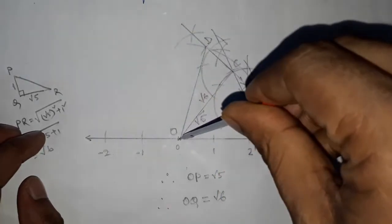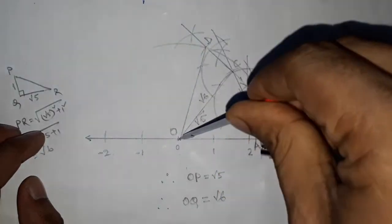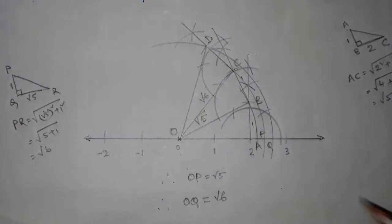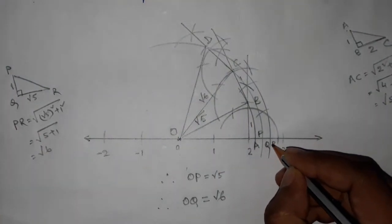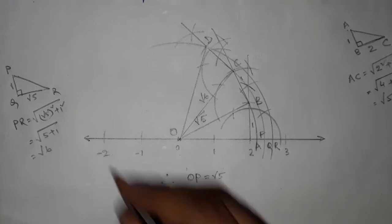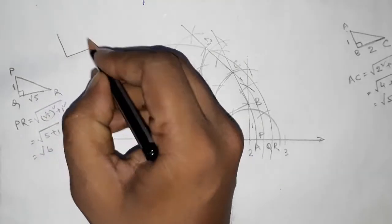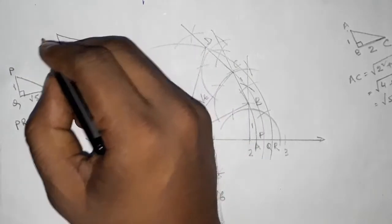Okay, this arc cuts the number line at point R. Okay, so now let's talk about some important things.